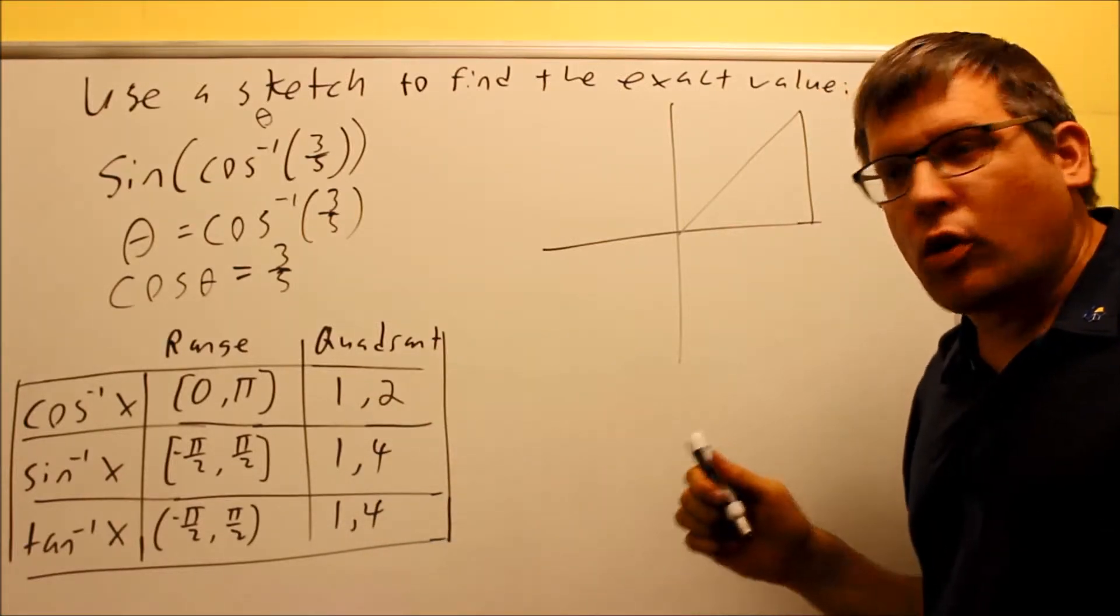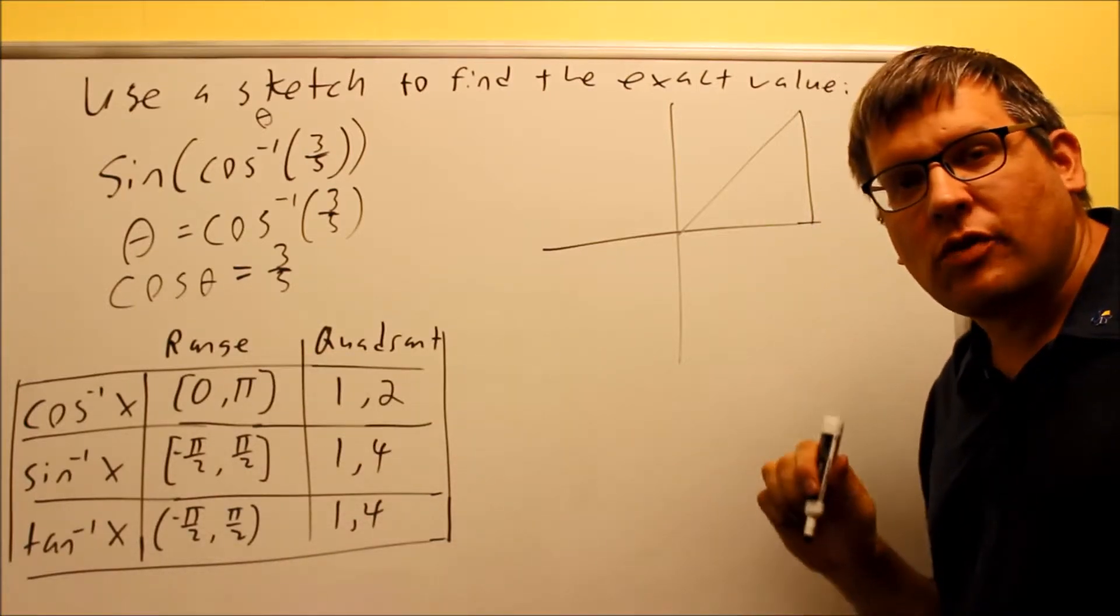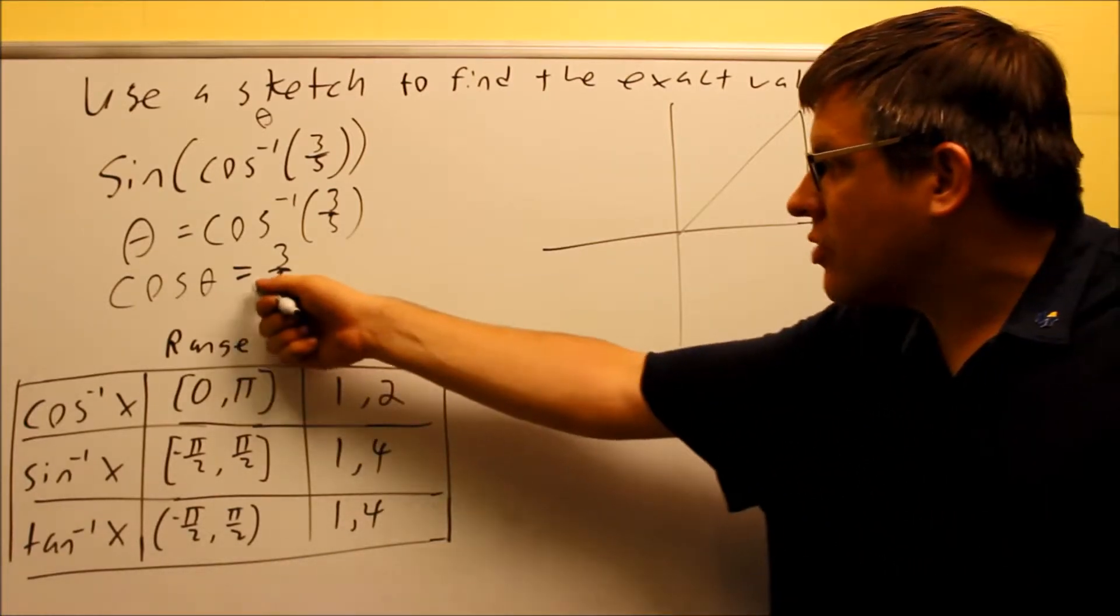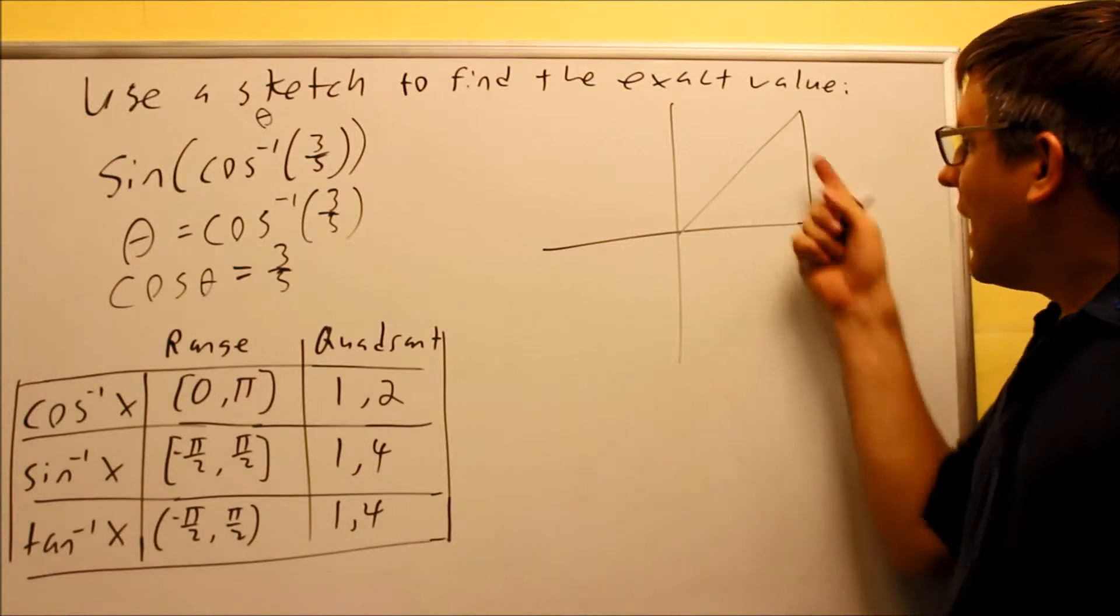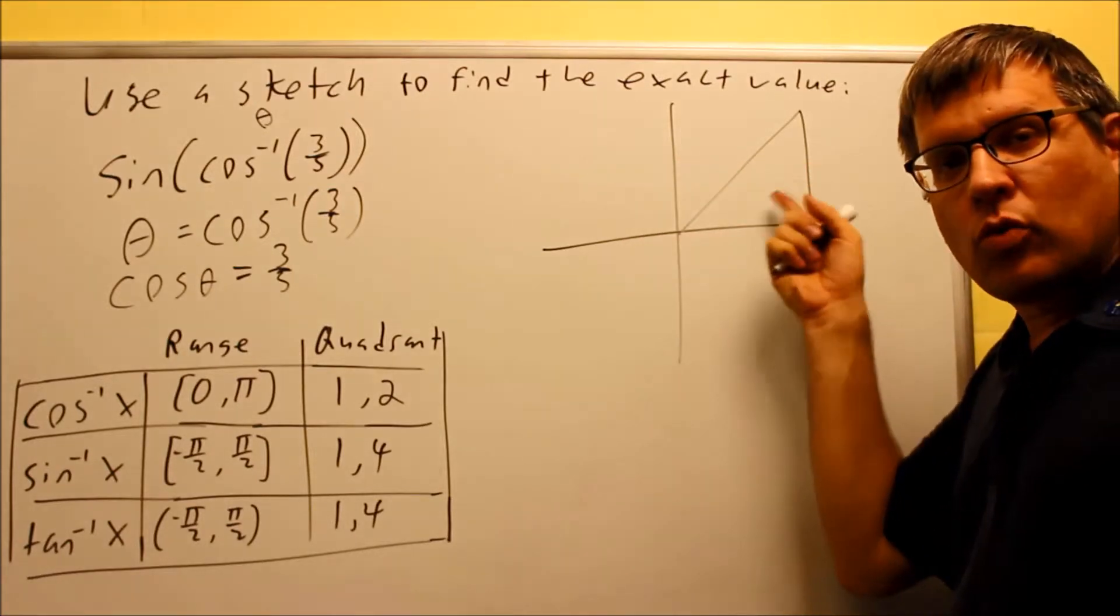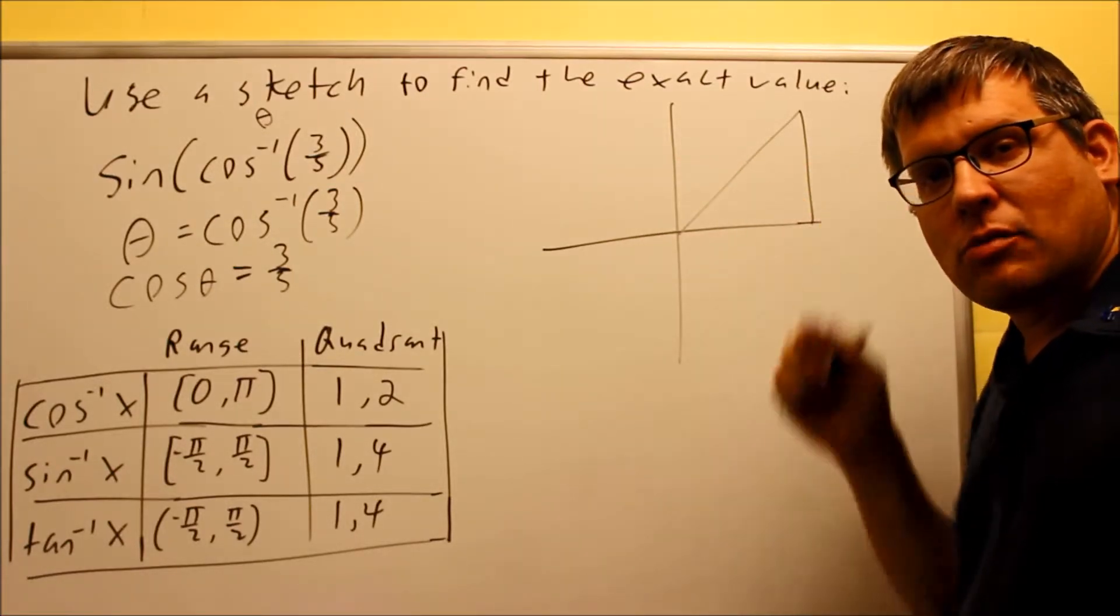So again, the table said I have a choice between one and two came from the range we talked about previously. And then from that, because the cosine was positive, out of these two quadrants, this is the only one that cosine would be positive in, and that's going to be quadrant number one.